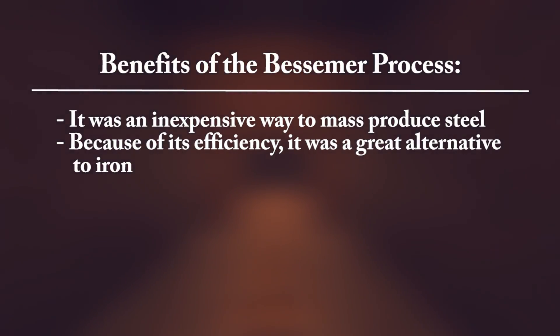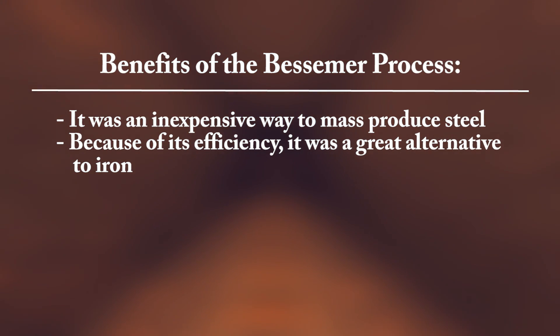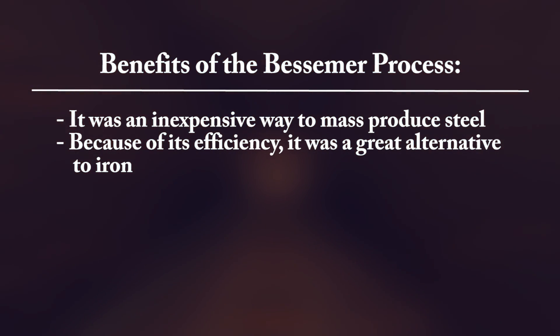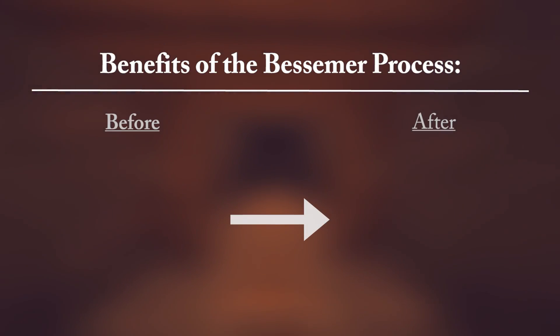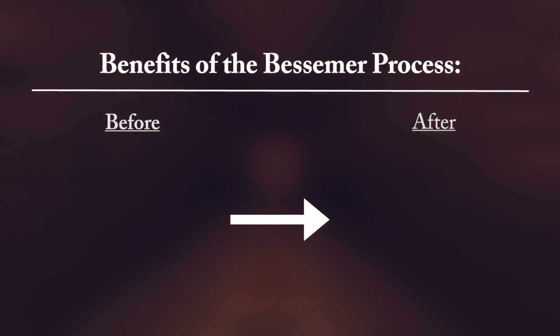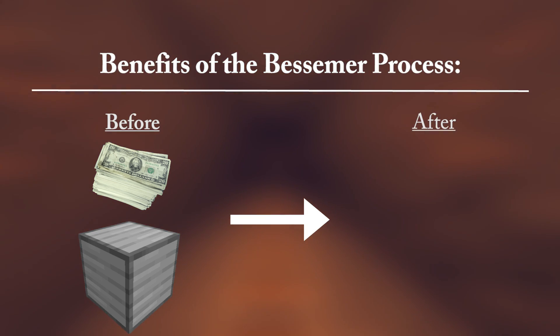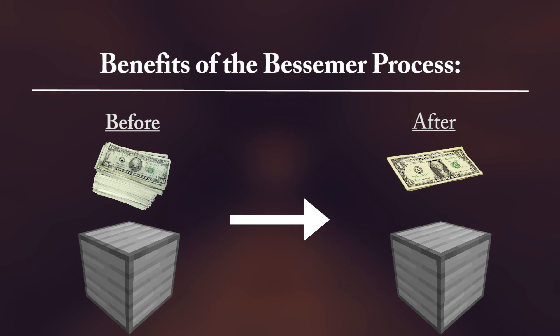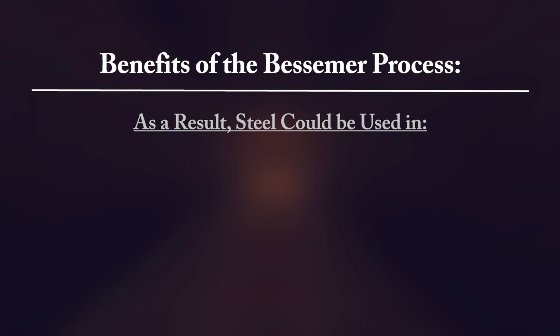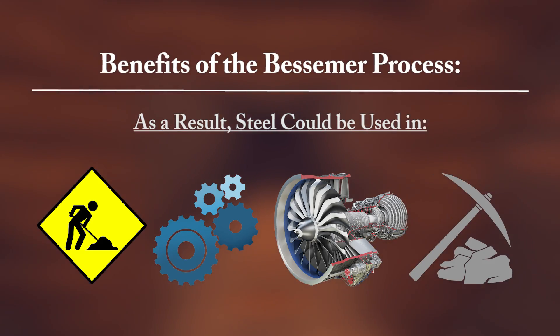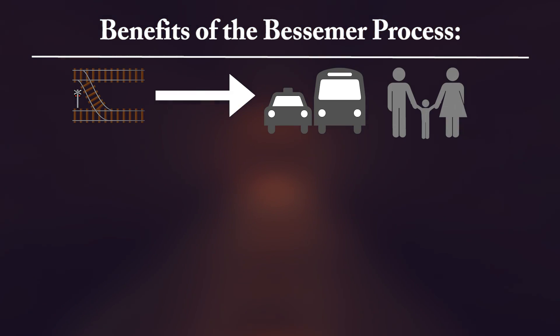There were many benefits to the Bessemer process. It was the first inexpensive way to mass produce steel before the creation of the open hearth furnace. Bessemer steel is also a great alternative to iron, as it could be made extremely quickly. Before the Bessemer process was developed, it cost about $50 to make one ton of steel, but the Bessemer process brought the price down to around $9 per ton. This allowed steel to be used in mass quantities for construction, engineering, machines, and mining. Steel was also used in train tracks, which improved transportation and people's lives.